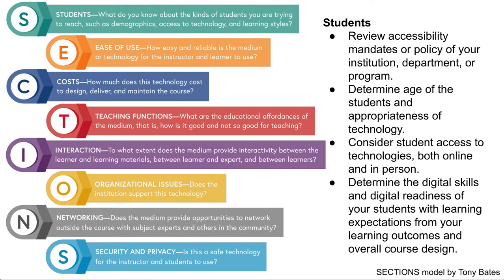The next framework for evaluating technology is the SECTIONS framework. SECTIONS stands for Students, Ease of Use, Costs, Teaching functions, Interaction, Organizational issues, Networking, and Security and privacy. It's a bit different from SAMR in that you're evaluating each of these areas to see if there are any problems to keep in mind when determining whether the technology would be appropriate for your classroom.